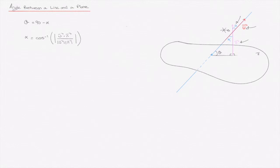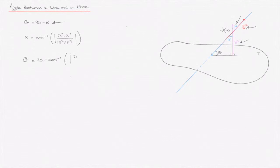What we've found so far is a formula to find angle alpha between vectors u and n. Using the relationship that theta equals 90 minus alpha, we're done — we have a formula for theta. We can write: theta equals 90 minus arc cos of the absolute value of u dot n, over the product of their respective magnitudes. That is the formula for the angle theta.